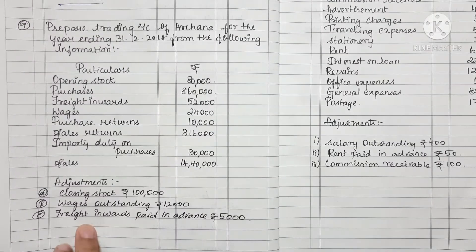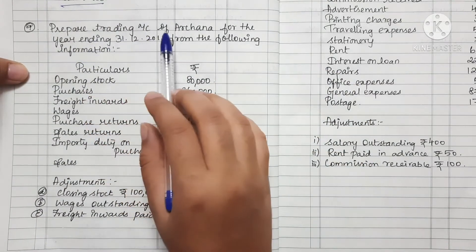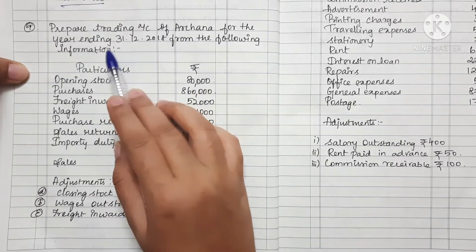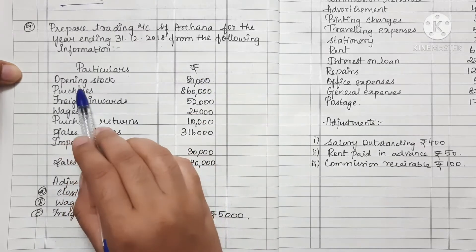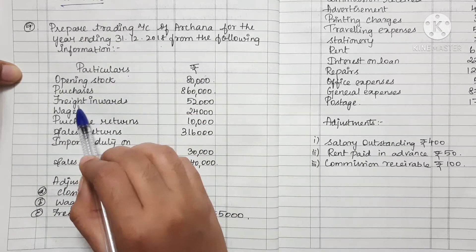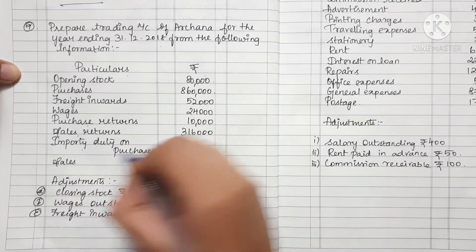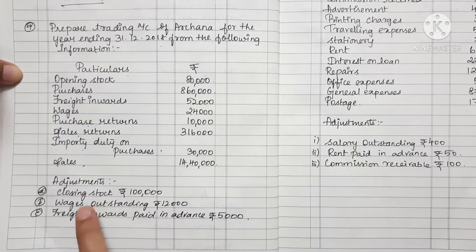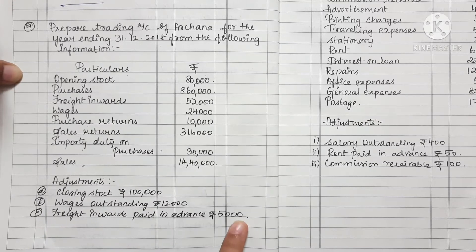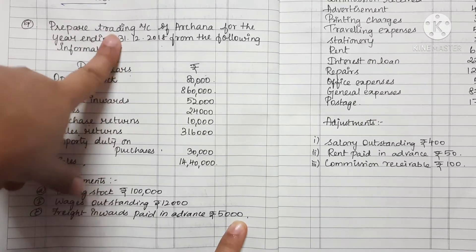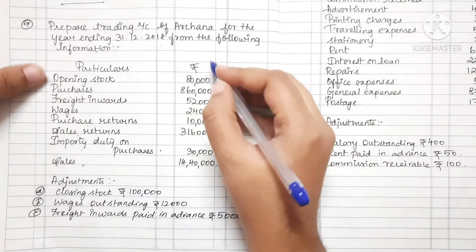Let's look at the next problem. Prepare a Trading Account for Archana for the year ending 31st. From the following information: opening stock, purchases, freight inward, wages, purchase return, sales return, import duty on purchases, sales. There are three adjustments: closing stock, wages outstanding, and freight inward paid in advance 5,000. Let's see how to construct the trading account.